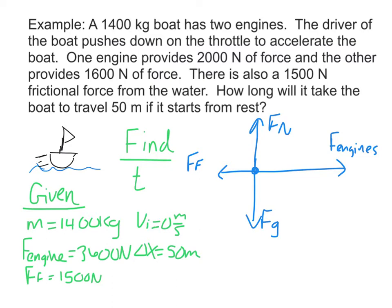So filling in these values, we know the force from the engines was 3600 newtons. We know that the frictional force is 1500 newtons. And then it gave us the mass, 1400 kilograms times 9.8 newtons per kilogram. Fg is 13,720 newtons. And Fn is also 13,720 newtons. So we found all the forces on the force diagram.